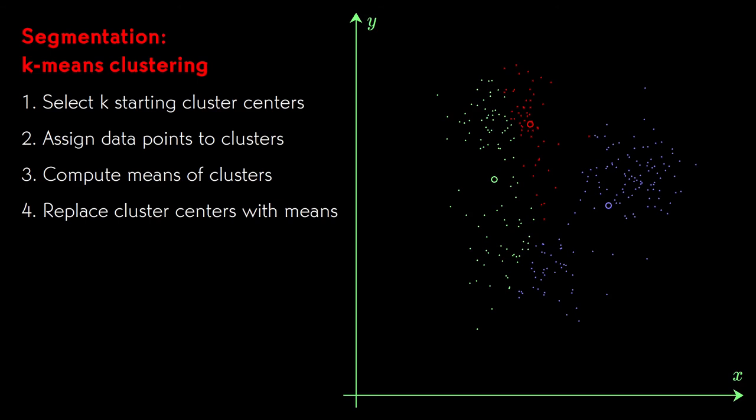These means become a new set of starting points for the clusters. Then we just keep doing this over and over, assigning points to clusters, and replacing the cluster centers with the centroids of the point sets. Eventually, the process converges. When the assignments don't change, we stop.